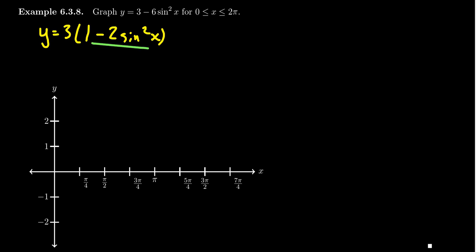1 minus 2 sine squared of x—this makes my trigonometric identity sense start tingling. 1 minus 2 sine squared of x is just half. I can apply the double angle identity for cosine right here. 1 minus 2 sine squared of x is just cosine of 2x. So we can simplify that very much so.